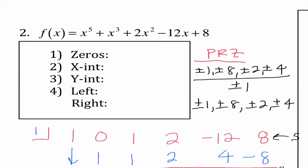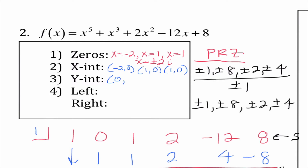For our zeros, I'm going to write x equals negative 2, x equals 1, x equals 1, and x equals plus or minus 2i. My zeros are negative 2, 0 and 1, 0 (written twice). My y-intercept is our constant, so that is 0, 8. I'm going to go ahead and plot these points right away.